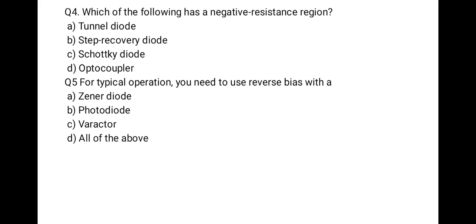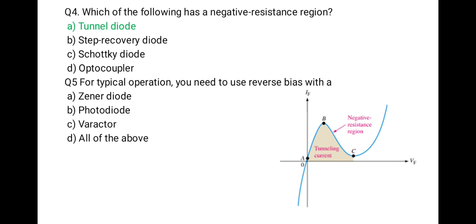The next question: which of the following has a negative resistance region? First tunnel diode, second step recovery diode, third Schottky diode, last optocoupler. The correct option is tunnel diode. In its IV characteristics, the negative resistance region means forward voltage increases with decreasing current. This curve is the negative resistance region, and this is the IV characteristic of the tunnel diode.